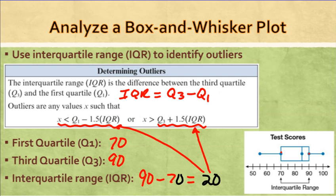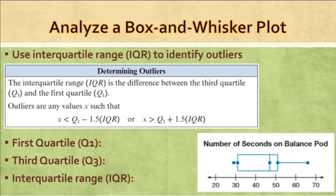Let's take a look at another example to find the IQR. Quartile one would be right here — we don't know exactly where it is, so we give a best estimate. I would say that's about 32; you could say 31 or 33. Quartile three I would say is 52. So the IQR is 52 minus 32, which gives us 20.